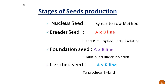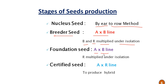Stages of seed production: the nucleus stage is produced by the ear-to-row method. In breeder seed, the A × B line is crossed and the B and R lines are multiplied under isolation. In foundation seed, the A × B line is crossed and the R line is multiplied under isolation. In certified seed, the A line and R line are crossed to produce the F1 hybrid, where the A line is utilized as the female and the R line as the male.